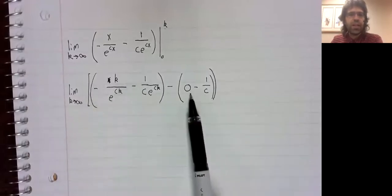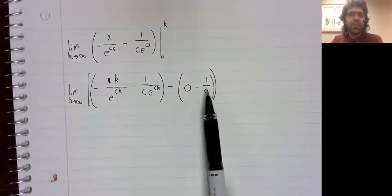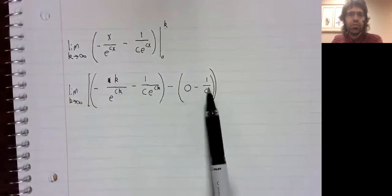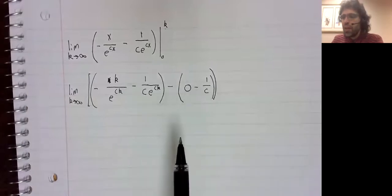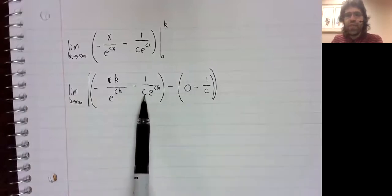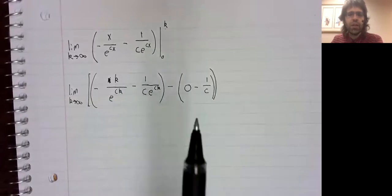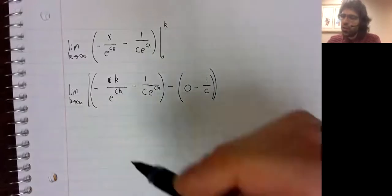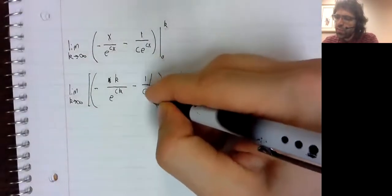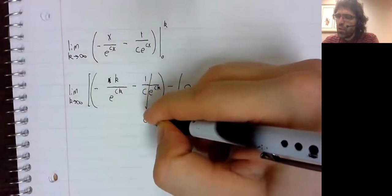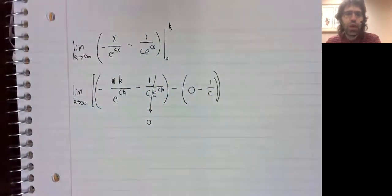As k goes to infinity, there aren't any k's in this term, so this doesn't do anything. As k goes to infinity here, the denominator goes to infinity. The numerator is constant. So that whole thing is zero.